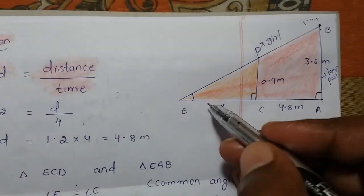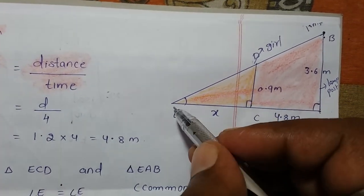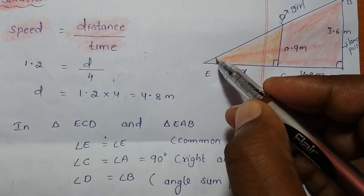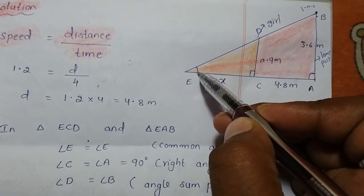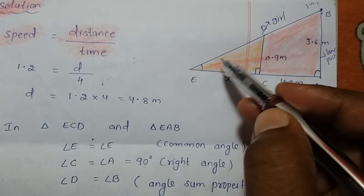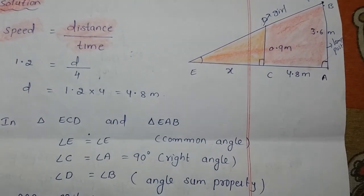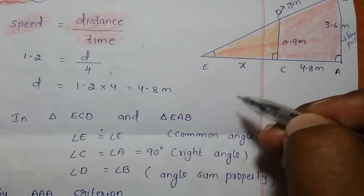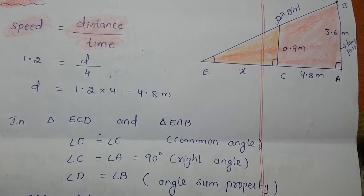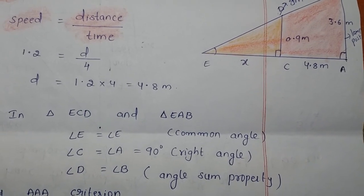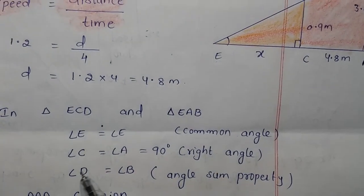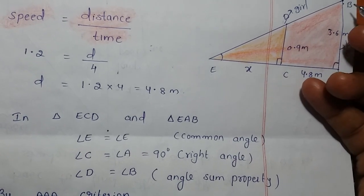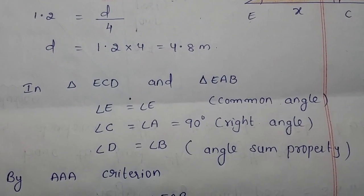Observing the two triangles for similarity: angle E is common to both triangle ECD and triangle EAB. Angles C and A are both 90 degrees, since the height of a person makes a right angle with the ground. Therefore, by angle sum property, angles D and B are also equal.